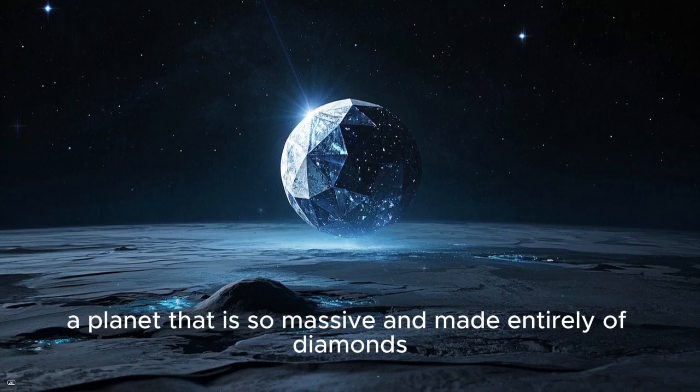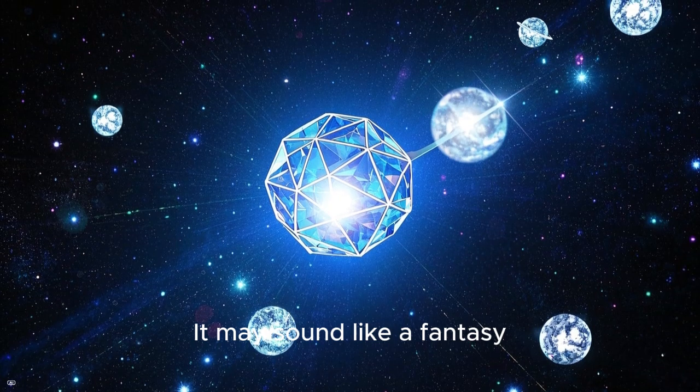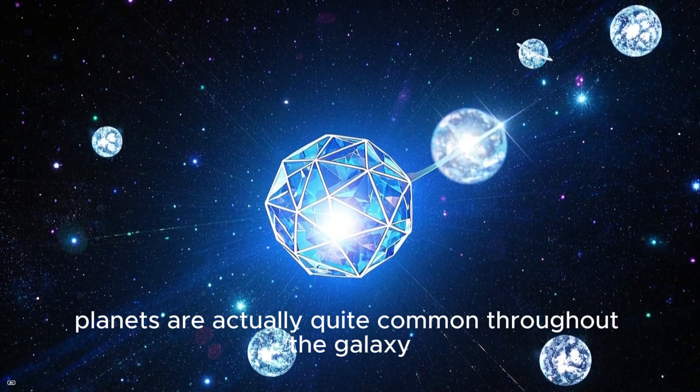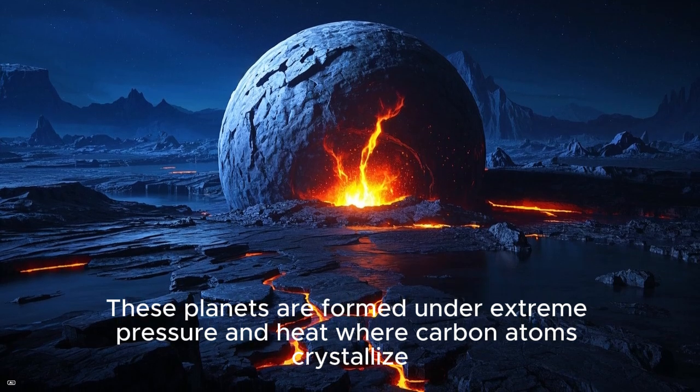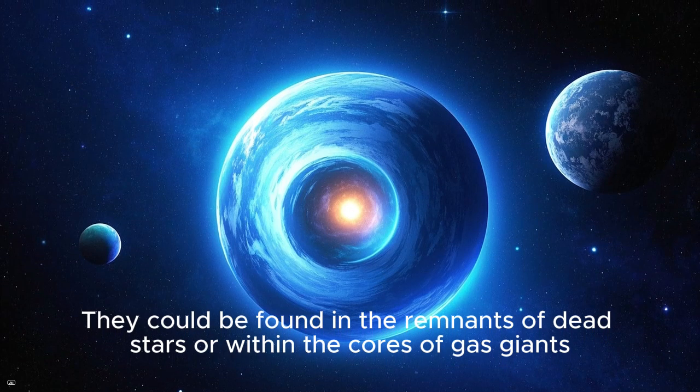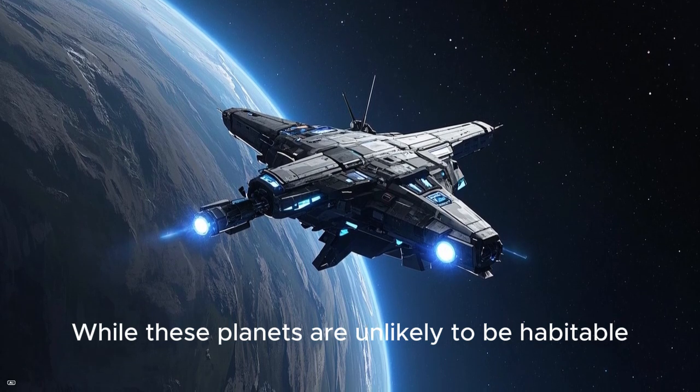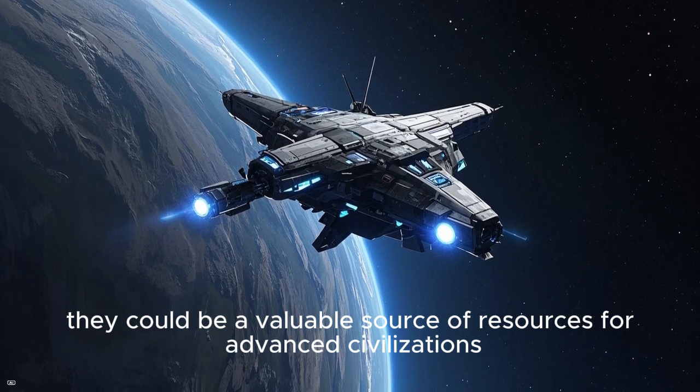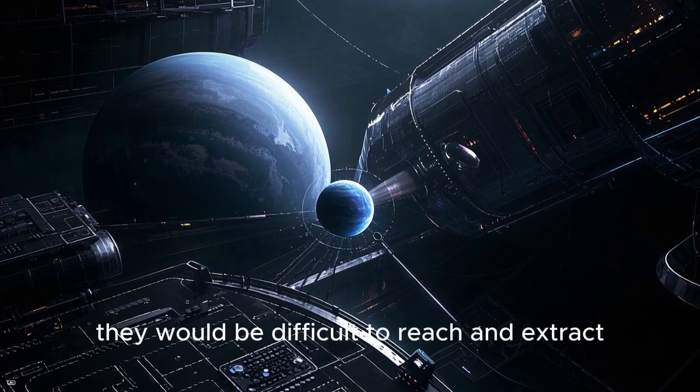Diamond planets: Imagine a planet that is so massive and made entirely of diamonds. It may sound like a fantasy, but scientists believe that these diamond planets are actually quite common throughout the galaxy. These planets are formed under extreme pressure and heat, where carbon atoms crystallize into a giant diamond structure. They could be found in the remnants of dead stars or within the cores of gas giants. While these planets are unlikely to be habitable, they could be a valuable source of resources for advanced civilizations. However, because they are so massive and dense, they would be difficult to reach and extract.